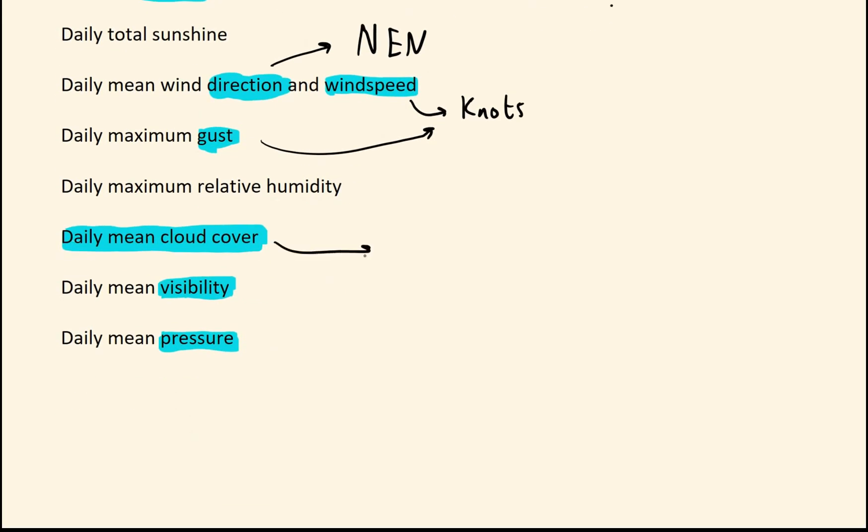We have daily mean cloud cover. This is measured in what are called octas, which are basically eighths. So you can have zero eighths, all up to eight eighths. So you basically have nine options. And again, they like asking some questions based upon that knowledge. And you've got visibility, we saw a second ago. That is measured in decameters or tens of meters. Rarely comes up, but worth knowing.